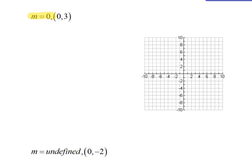So I'm going to go ahead and graph the point (0,3). And then if we have a slope of zero, that means that has to be a horizontal line, because all horizontal lines have slopes of zero.